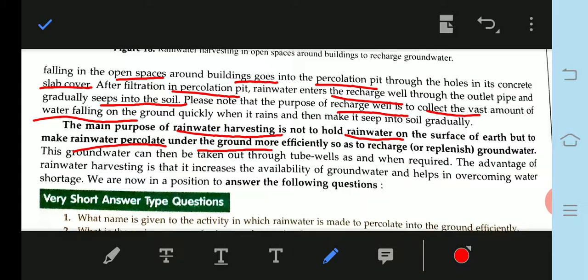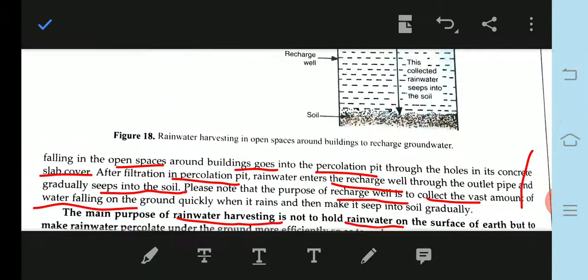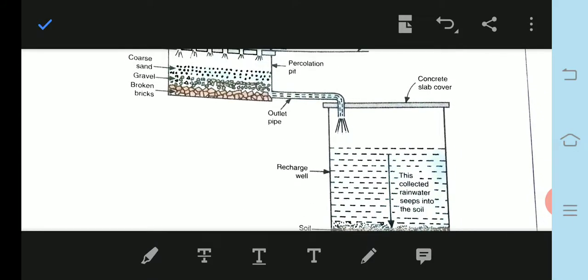The advantages of rainwater harvesting is that it increases the availability of groundwater and helps in overcoming water shortage. We are now in a position to see the figure on how it works.